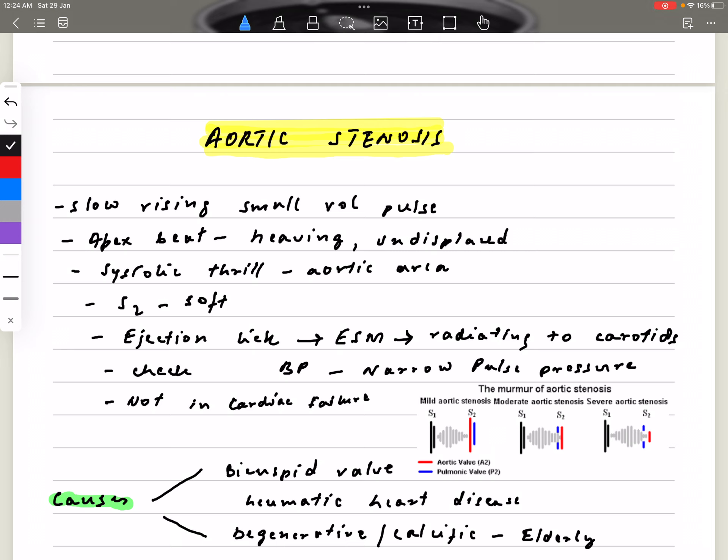So once you're done with your presentation, you can say that I'd like to check the blood pressure, and normally I'll be expecting to see a narrow pulse pressure. The patient is at the moment not in cardiac failure; normally they are quite stable patients in the PACES exam. This is how you're going to present your case, starting with the pulse, commenting about the apex beat, any thrill, commenting about the heart sound, and finally commenting about the murmur.